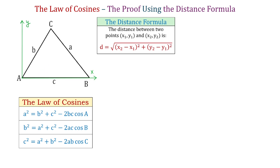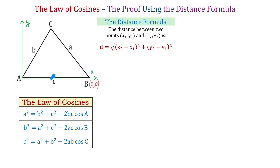To use this formula we need to place this triangle in the rectangular coordinate system with point A at the origin. Now here we have the x-axis and the y-axis. Then we will use the distance formula to find side A, but for this we need the coordinates for point B and point C. To find the coordinates for point B is easy because the x-coordinate is C and the y-coordinate is 0.